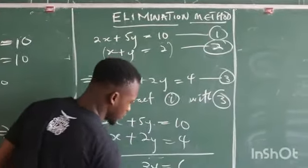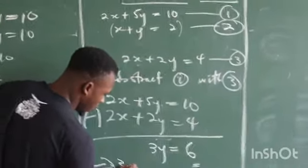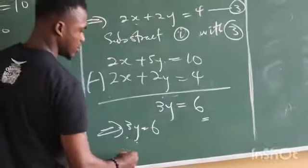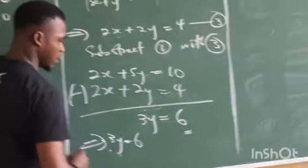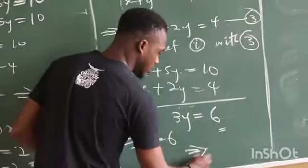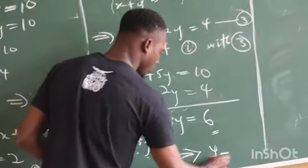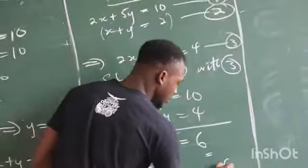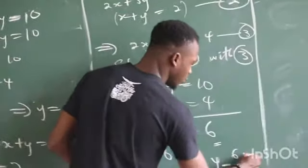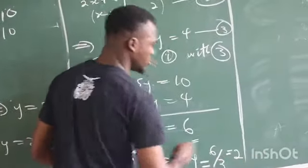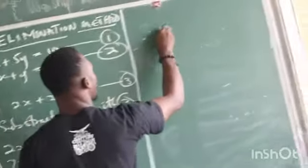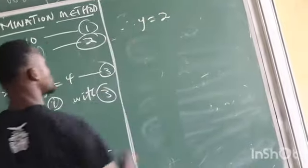This implies that 3y equals 6. If we divide both sides by 3, we are going to see that y equals 6 divided by 3 which equals 2. We have that y equals 2.